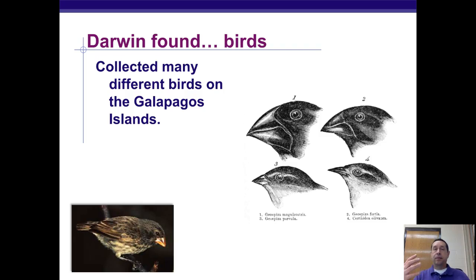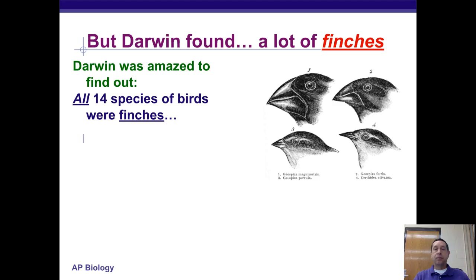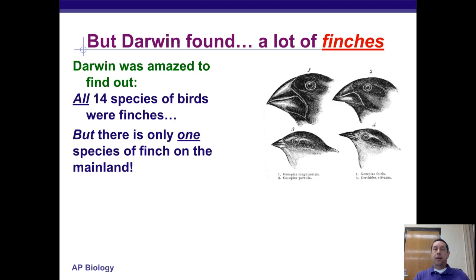Darwin spent a lot of time examining different birds he collected on the Galapagos Islands. Some of them looked very different from one another, but what he thought were different kinds of birds were actually all different kinds of finches — the same type of bird. He ultimately found 14 species of finches on the Galapagos, which was remarkable because there was only one kind of finch on the mainland. Typically organisms arrive from the mainland to islands, so you wouldn't expect more species on an island than on the mainland — but that's not what Darwin found.